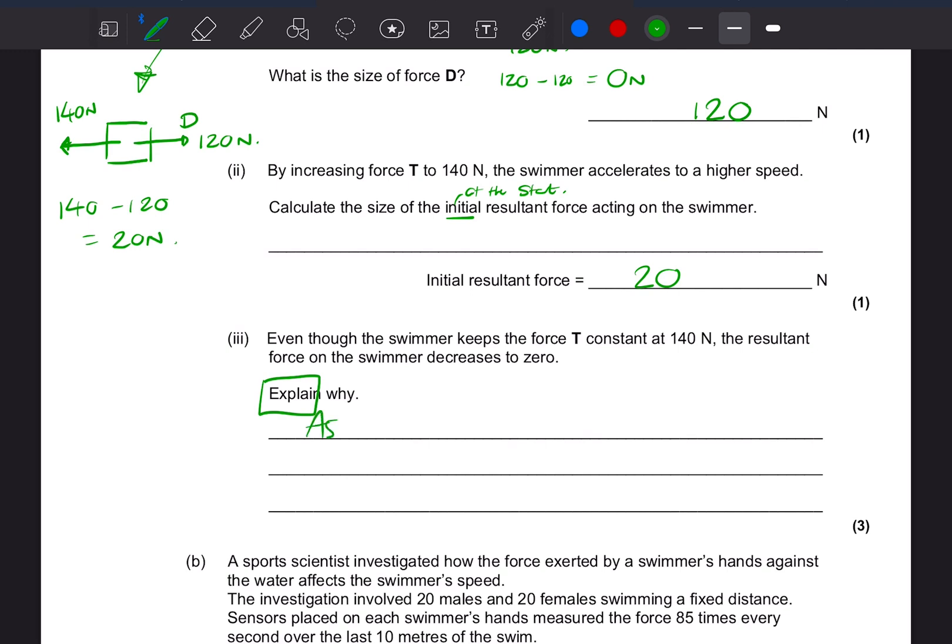So that's what happens here. So for three marks, as the swimmer moves faster through the water, they collide with more water particles, causing the drag force to increase.